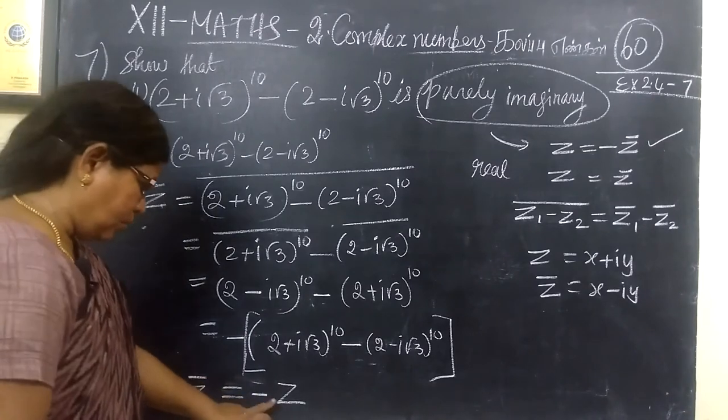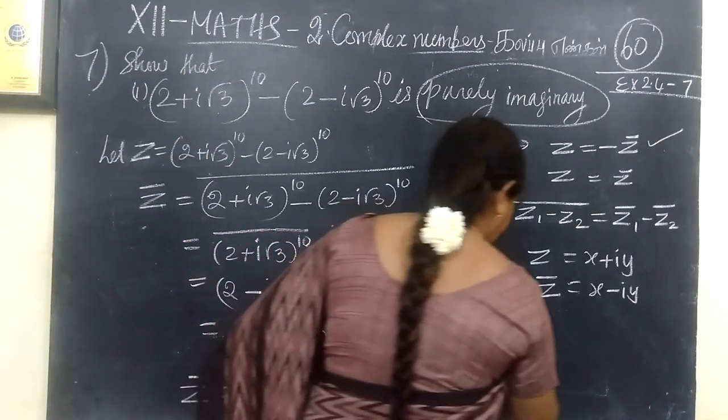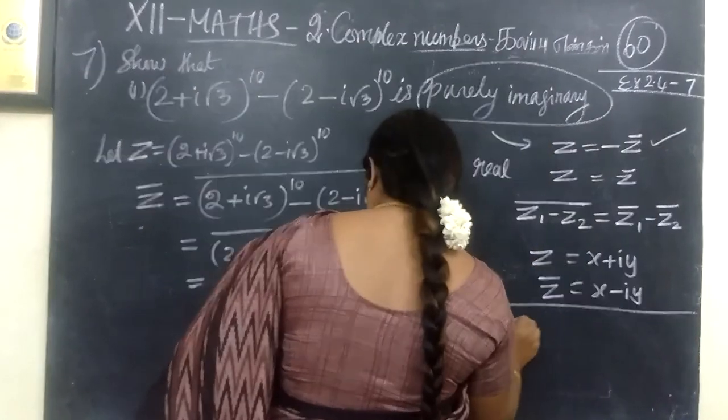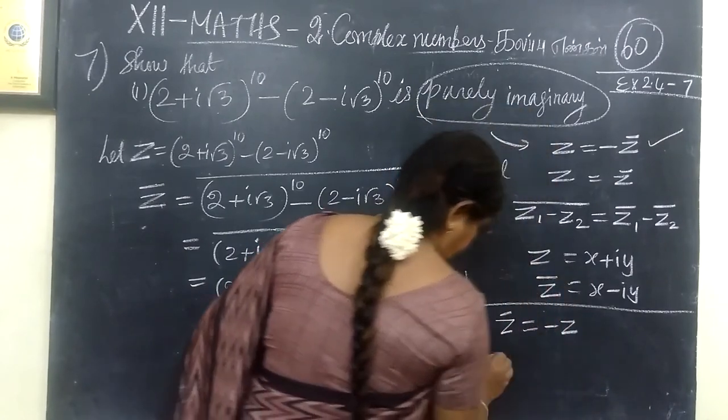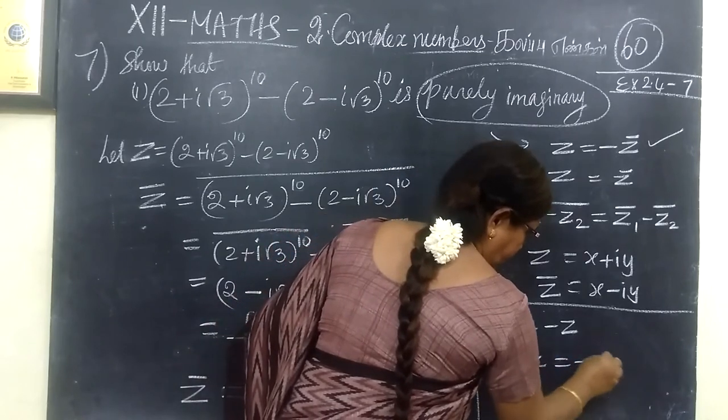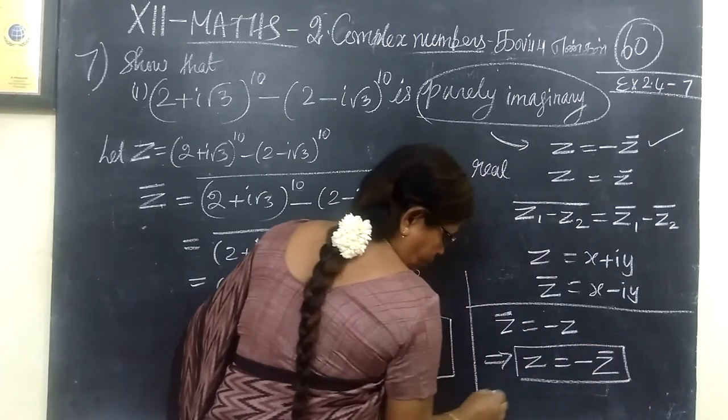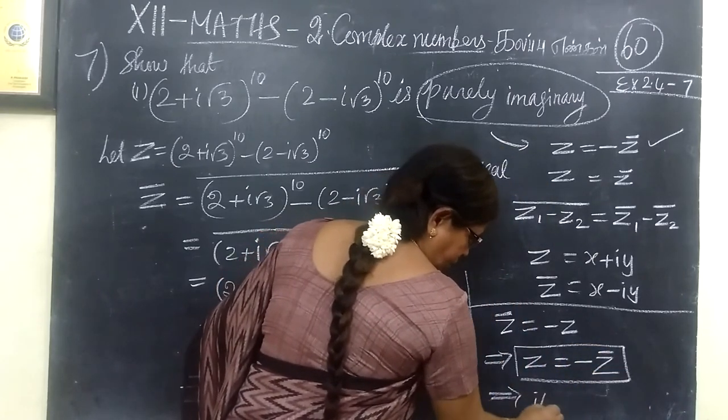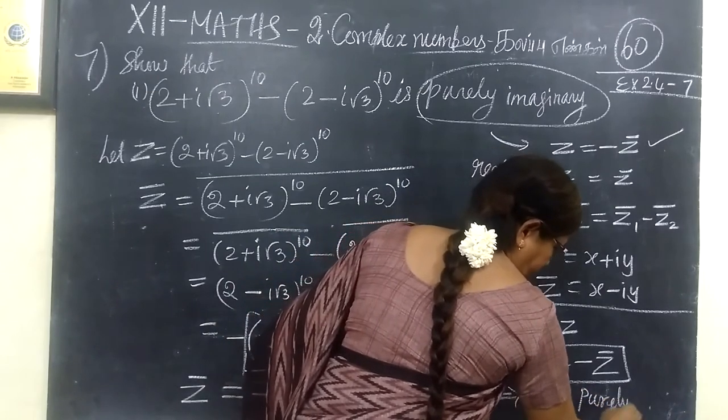Z bar equal to minus z. So minus to this side, which implies z bar equal to minus z implies z equal to minus z bar. This minus is in this way. So z equal to minus z bar implies it is purely imaginary. That's for us.